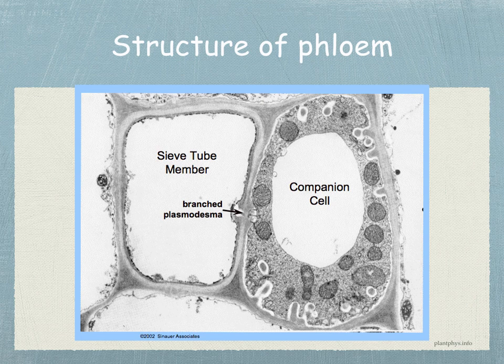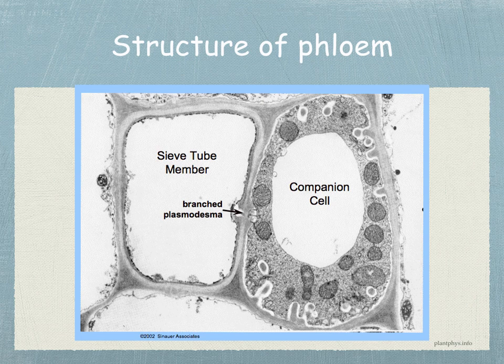Here you can see a beautiful image of the sieve element next to the companion cell. Notice how the dense cytoplasm is in the companion cell, and also note the large number of mitochondria in the companion cell. The cytoplasm is around the edge of the sieve tube member — so we said that it's peripheral. The center of the sieve tube element is not a vacuole; it's actually an empty lumen through which the sap moves. Both these cells are connected by plasmodesmata.